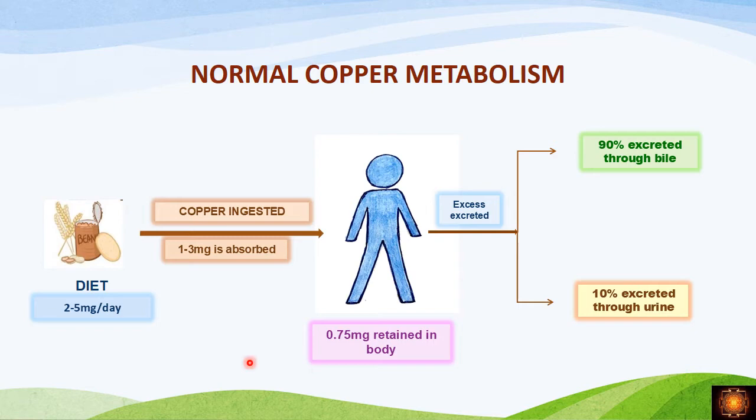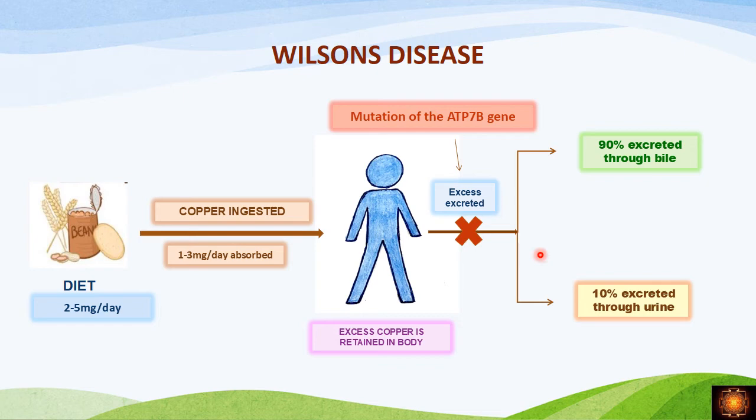In normal copper metabolism, the diet we take daily has two to five milligrams of copper, out of which only one to three milligrams is absorbed, and in the body only 0.75 milligrams is retained. Any excess copper that has been absorbed is excreted out — 90 percent through the bile and 10 percent through the urine. This is normal copper metabolism.